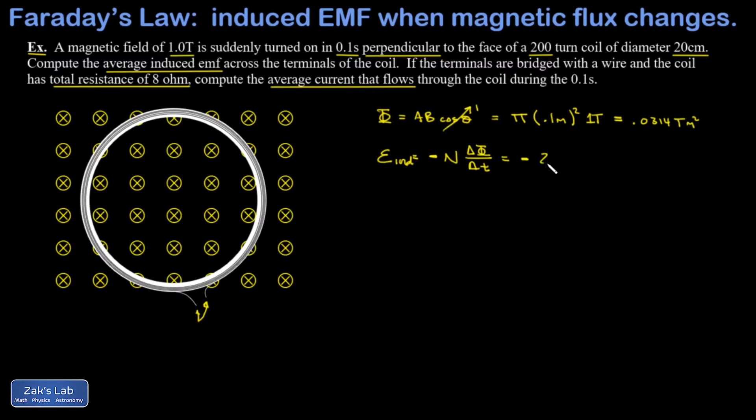And we have 200 turns, so capital N is 200. My change in flux, it started at zero and ended at 0.0314. So my change in flux is 0.0314. And the time it took is one-tenth of a second. So I get negative 62.8 volts for this EMF.